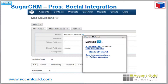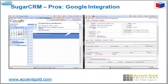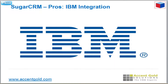Social integration includes Twitter, Facebook, LinkedIn, Hootsuite, and InsideView — all built in, out of the box, for free. Google integration is built in as well with Gmail and Calendar, and you can also import your contacts with one button directly from Gmail contacts.